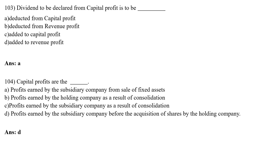MCQ number 103: Dividend to be declared from capital profit is to be: Option A — deduct from capital profit; Option B — deduct from revenue profit; Option C — added to capital profit; Option D — added to revenue profit. The correct answer is Option A — deduct from capital profit.